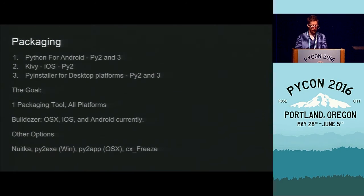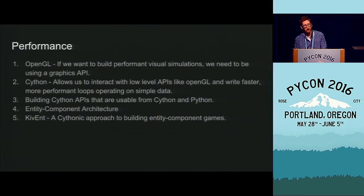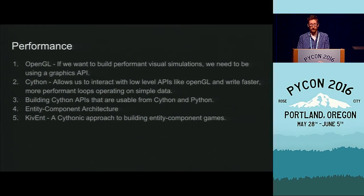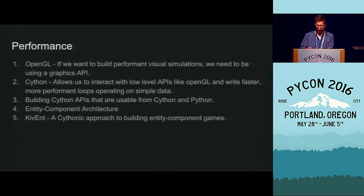Let's get into the performance stuff. Performance comes down to several things. The most important for visual simulations is correctly using graphics APIs — in this case OpenGL, which Kivi likes to use. These GPUs have fantastic levels of power, and if we use them correctly, we don't even have to worry about Python being slow because all the most intensive code is computed on the GPU. Cython is also a great tool for interacting with low-level APIs such as OpenGL, a physics engine, spatial hashing, and so on.